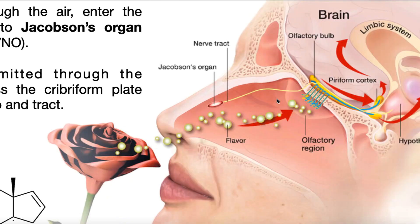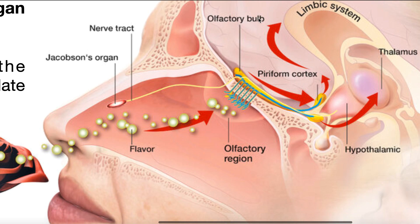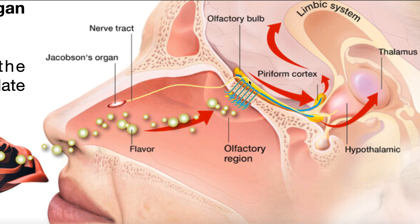Let's zoom in on the olfactory bulb. Recall that the olfactory nerve, or cranial nerve 1, is really just the olfactory bulb and then the olfactory tracts that project posteriorly from that. Just below the olfactory bulb, we have the cribriform plate. The cavity above it is the cranial cavity, and below it is the nasal cavity. The olfactory bulb sits on the cranial side of the cribriform plate, and projecting from it are cells called the olfactory receptor cells.